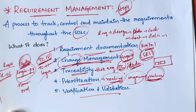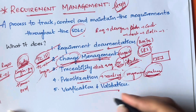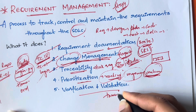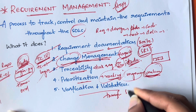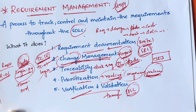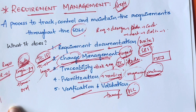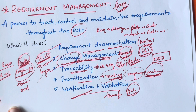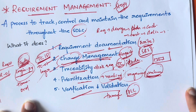Next is verification and validation. You will be continuously verifying and validating all the requirements throughout the SDLC process. This means verifying whether the requirements can be implemented, whether they are realistic, and whether they are really needed — and all of this happens continuously throughout the software development life cycle.